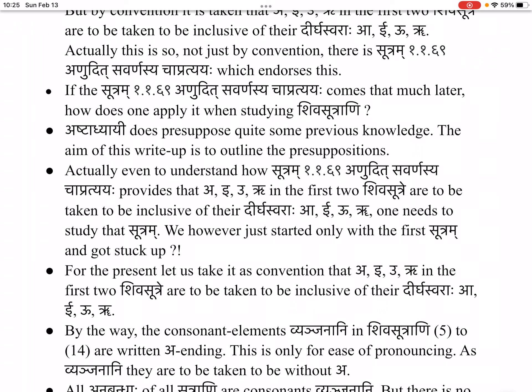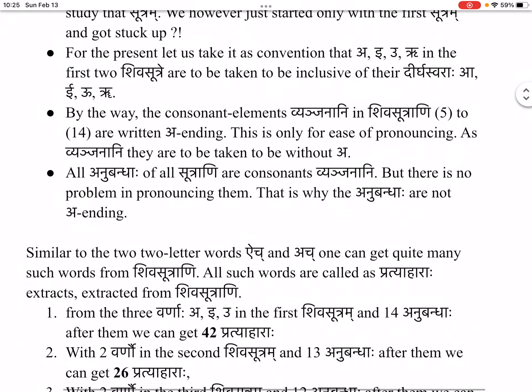By the way, the consonant elements — vyañjanāni — in Shivasūtrāni 5 to 14 are written with an 'a' ending. This is only for ease of pronouncing. As vyañjanāni, they are to be taken without 'a'. All anubandhāha of all sūtrāni are consonants — vyañjanāni. Similar to the two-letter words 'ac' and 'hal', one can get quite many such words from Shivasūtrāni. All such words are called pratyahārāha — extracts extracted from Shivasūtrāni.